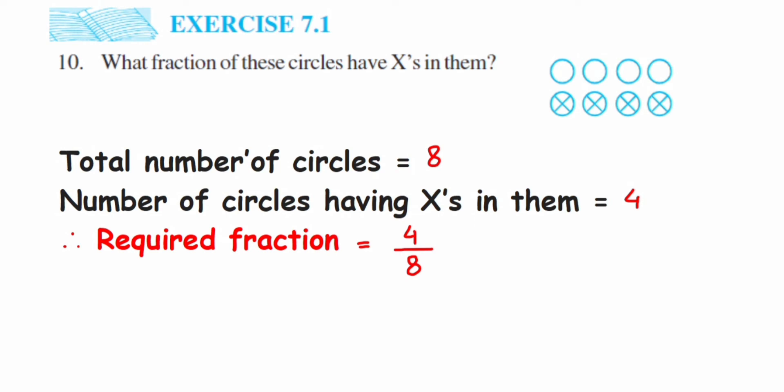4 by 8, or 4 upon 8. But this is not in reduced form. We can cancel this: four ones are 4, and four twos are 8. So this equals 1 upon 2. You have to bring the fraction to reduced form, so 1 by 2, or 1 upon 2, is the required fraction.